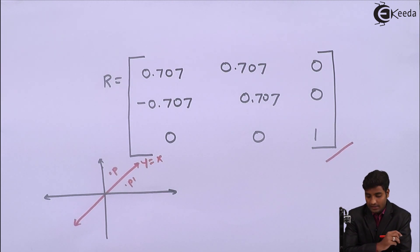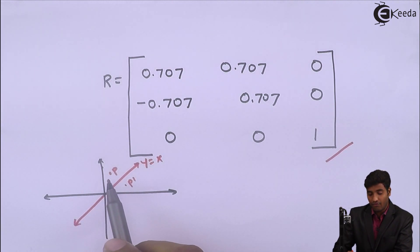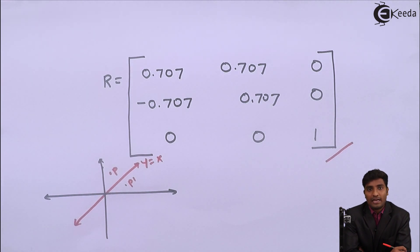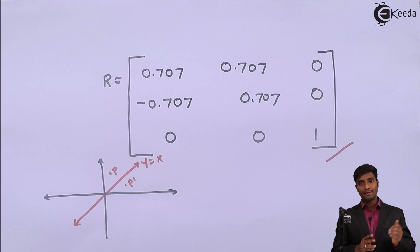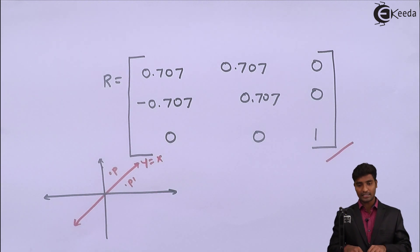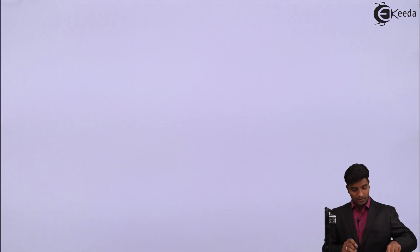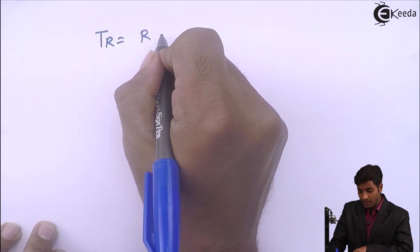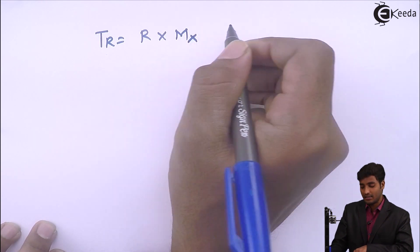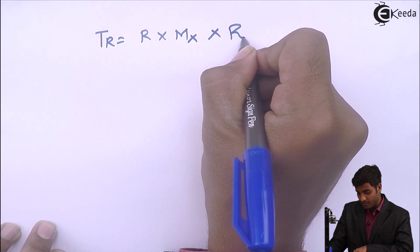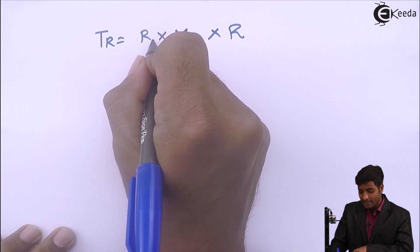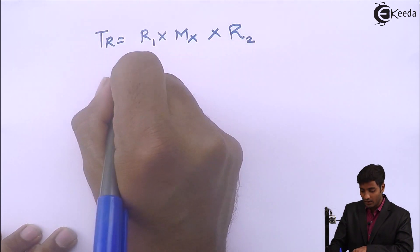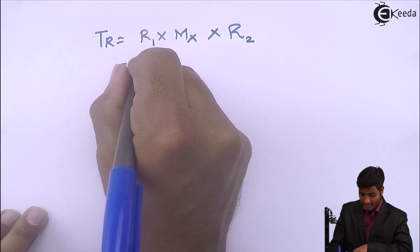Now, to obtain the resultant matrix for the reflection of a point about the line y is equal to x, we have to multiply all the matrices used in these transformations to find the resultant transformation TR. The resultant transformation TR equals R1 into MX into R2, where R1 is the first rotation, MX is the mirror about the x-axis, and R2 is the back rotation.